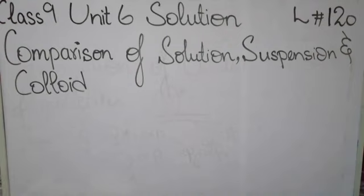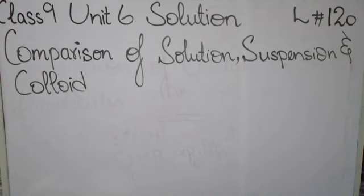When we started the chapter, we saw many different properties of solution. First, we got to know what a solution is, what the different components are — which are solute and solvent. We have studied different formulas so that when you study a solution, you can prepare it by a given amount, or find the amount of solute and solvent.